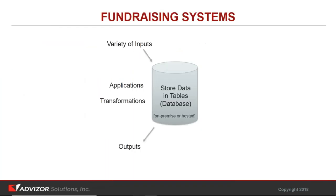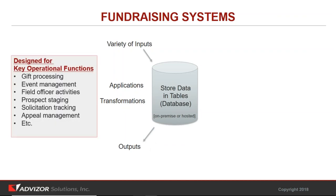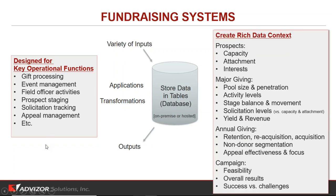Conceptually, a fundraising system has a variety of inputs: field officers on mobile devices, gift recording, people putting data into a database — stored in tables, either on-premise or hosted. There's a set of applications and transformations that happen, and then there are outputs. These systems are designed for operational functions: gift processing, event management, field officer activities. But along the way they collect rich data, and the challenge is how do you get it out and synthesize it into a form where you can actually use it?